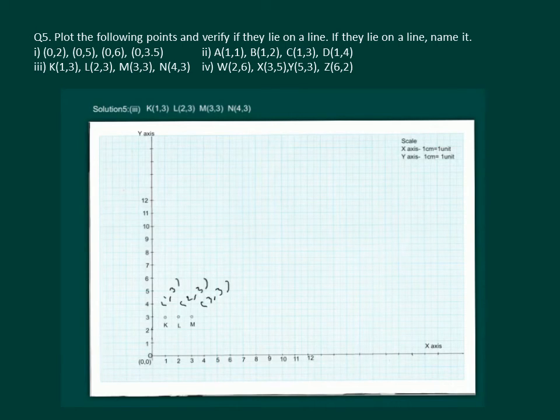Next is N(4,3). Now let us join the points. On joining the points, we can see that they lie on a line which is parallel to the x-axis and we can name it as KN.